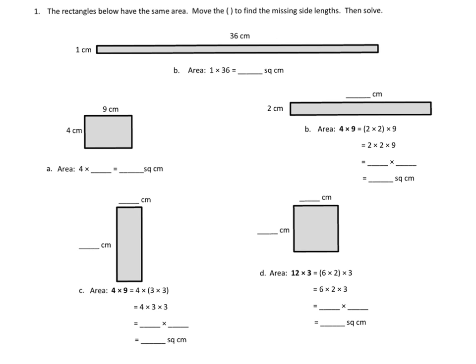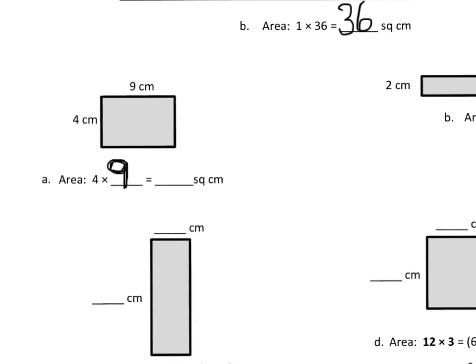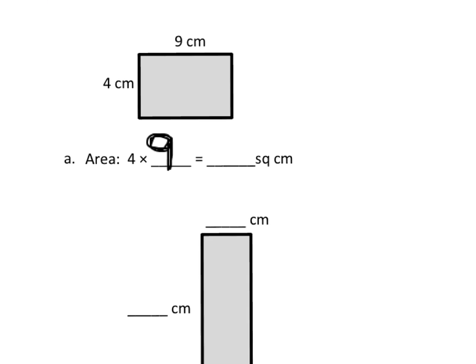This question says: the rectangles below have the same area — that's the important thing — and move the parentheses to find the missing side lengths. We're going to start with this skinny rectangle — it's 1 by 36, so the area is 1 times 36, which is 36 square centimeters. When we move down to question A, we now have 4 by 9, so 4 times 9 is our area, and 4 times 9 is 36.